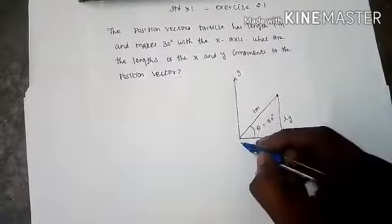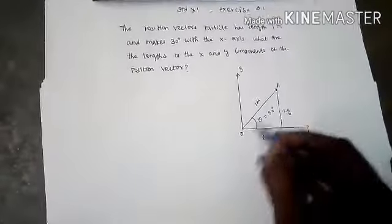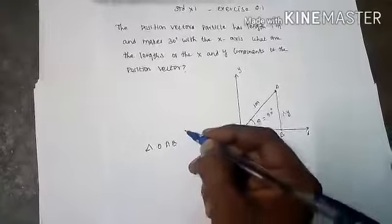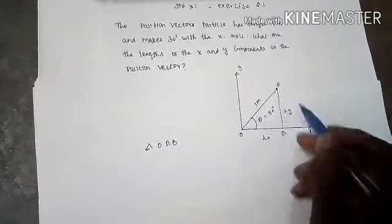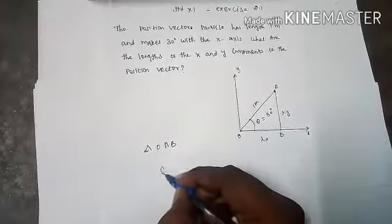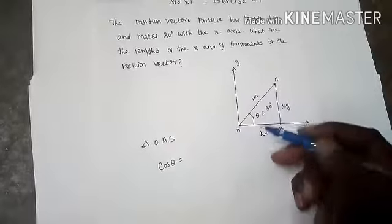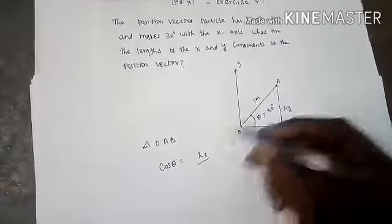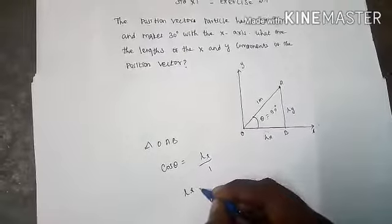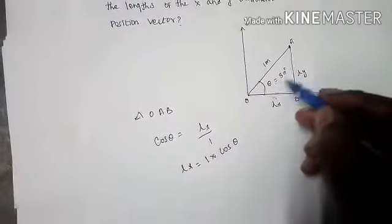This makes a triangle OAB. In triangle OAB, we will find out Lx and Ly. First, let's find out Lx. The formula used here is cos theta. So cos theta equals adjacent side divided by hypotenuse. The adjacent side is Lx and the hypotenuse side is 1. I want to calculate Lx, so Lx equals 1 times cos theta. The theta value is 30 degrees.